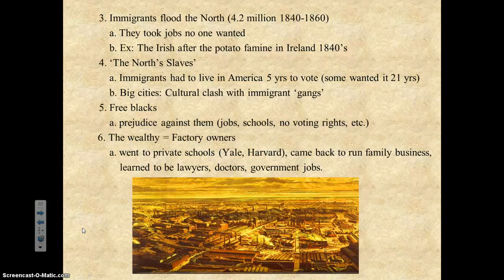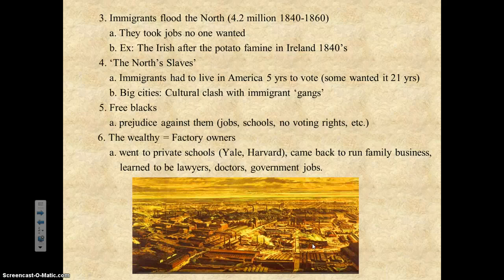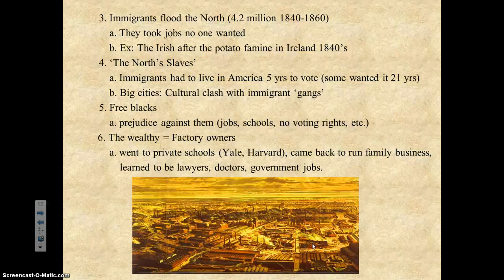Immigrants flooded the North. There is a picture of what a northern city would look like — connected by canals, railroads, roads, and rivers. Most immigrants, free African Americans, or anyone seeking work took to the North's big cities to get a factory job. You didn't need an education — it was guaranteed money. Whereas on a farm a drought means no pay, factories are open 365 days a year. From 1840 to 1860, four and a half million people flooded the North.